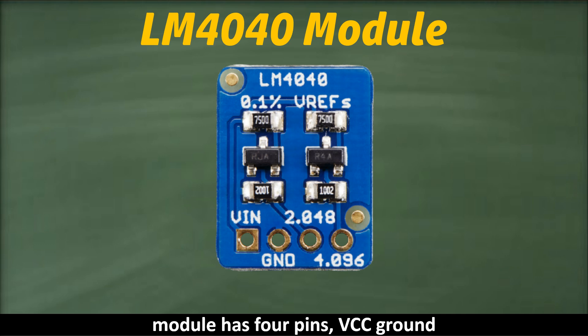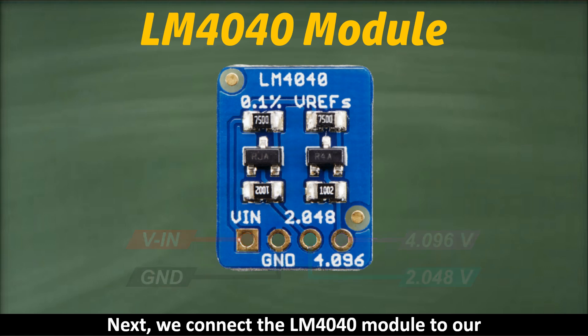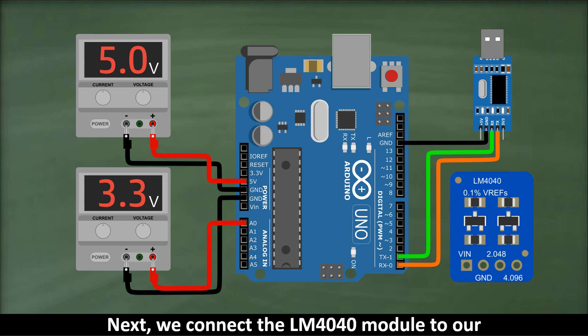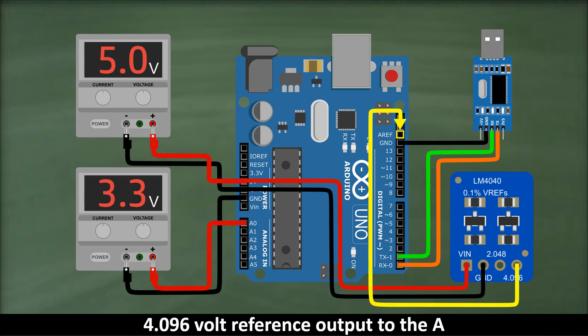The module has four pins—VCC, ground, and two reference outputs of 4.096 volts and 2.048 volts. Next, we connect the LM4040 module to our Arduino. The VCC pin of the module will go to the Arduino's 5-volt pin, the ground pin to Arduino's ground, and the 4.096-volt reference output to the AREF, analog reference pin, of the Arduino. But don't connect AREF pin yet. Since the code still uses the default reference voltage, applying an external voltage directly to the AREF pin without declaring it in the code could damage the ATmega328 chip.